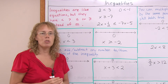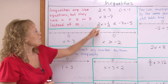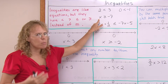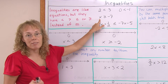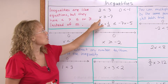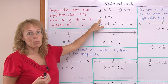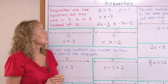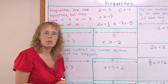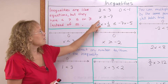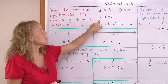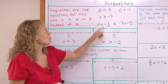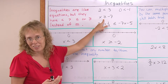An inequality usually doesn't have just one solution. For example, look at x is greater than or equal to negative 7. There are many numbers I can put in place of x that make the inequality true, such as 0, 1, or 2 — they're all greater than negative 7. Even negative 7 itself, because negative 7 is equal to negative 7, so it fulfills this inequality since we have greater than or equal.